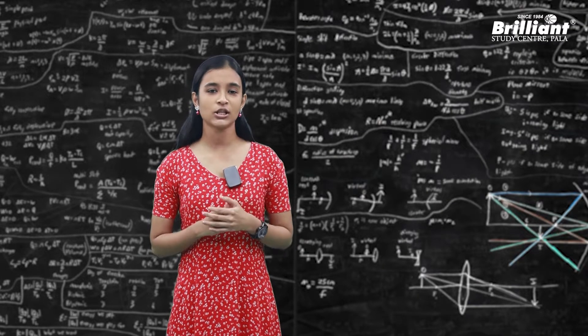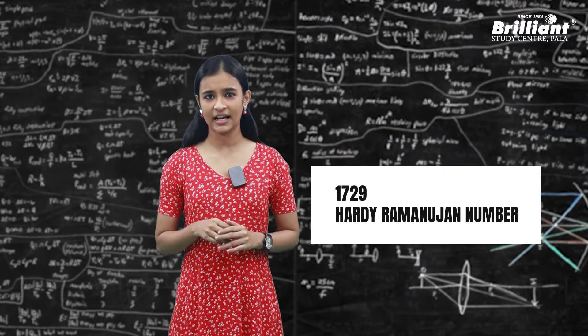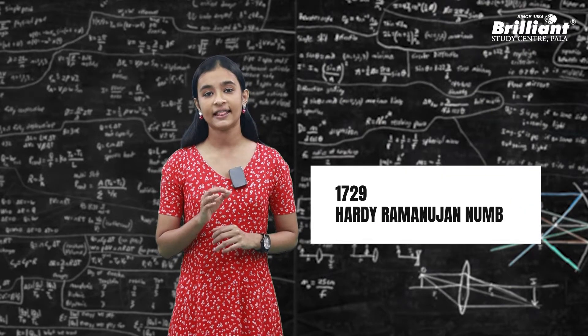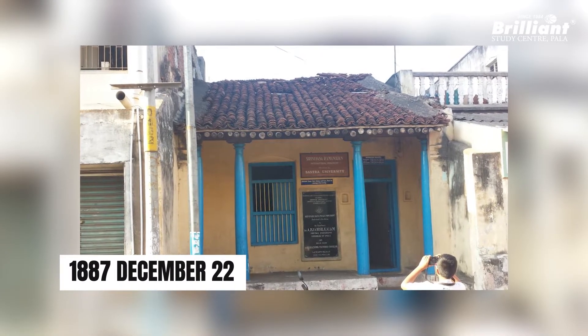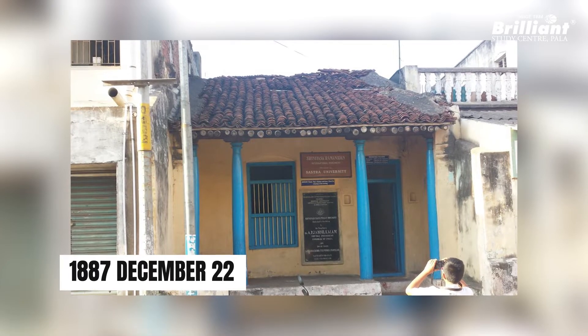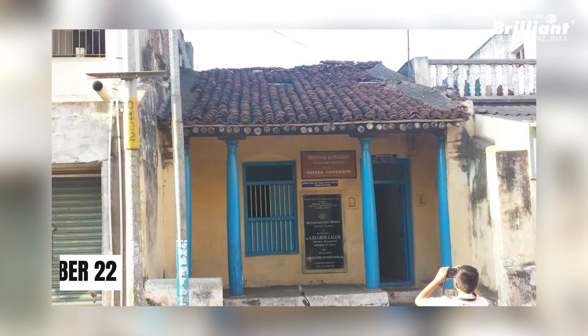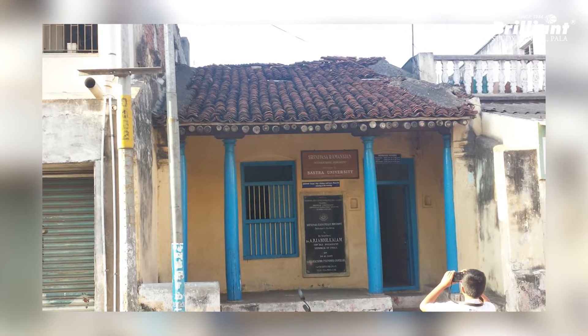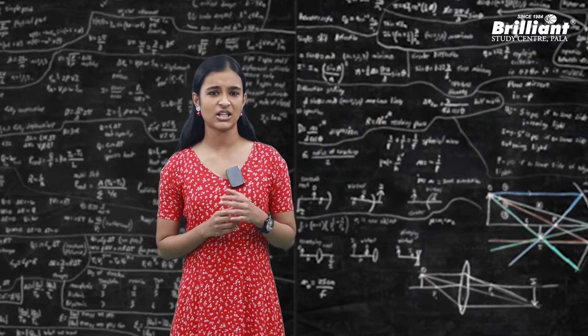A unique name - Ramanujan's number. On 1887 December 22nd, in a small Tamil Brahman family, Ramanujan was born.